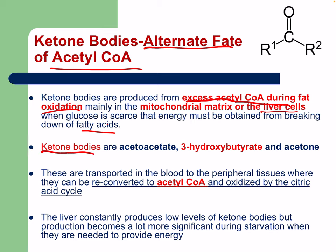Ketone bodies are acetoacetate, beta-hydroxybutyrate, and acetone. These get transported in the blood to peripheral tissues where they can be reconverted into acetyl-CoA and oxidized by the citric acid cycle. The liver constantly produces low levels of ketone bodies, but production becomes more significant during starvation when they are needed to provide energy.